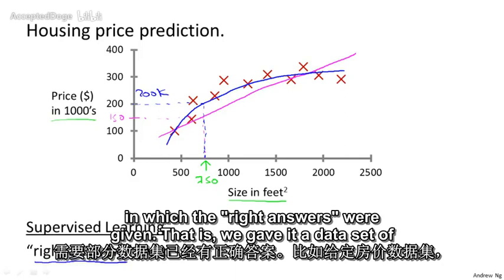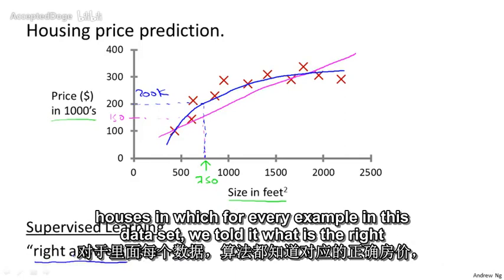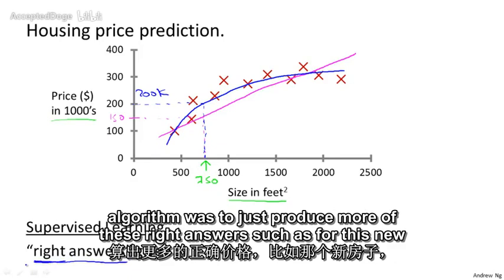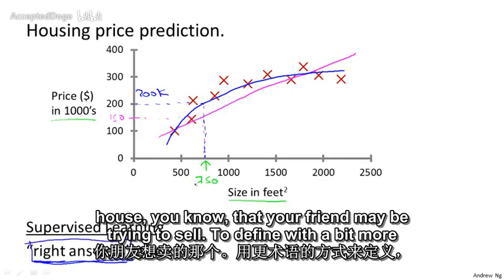That is, we gave it a dataset of houses in which, for every example in this dataset, we told it what the right price was — the actual price that that house sold for. The task of the algorithm was to just produce more of these right answers, such as for this new house that your friend may be trying to sell.